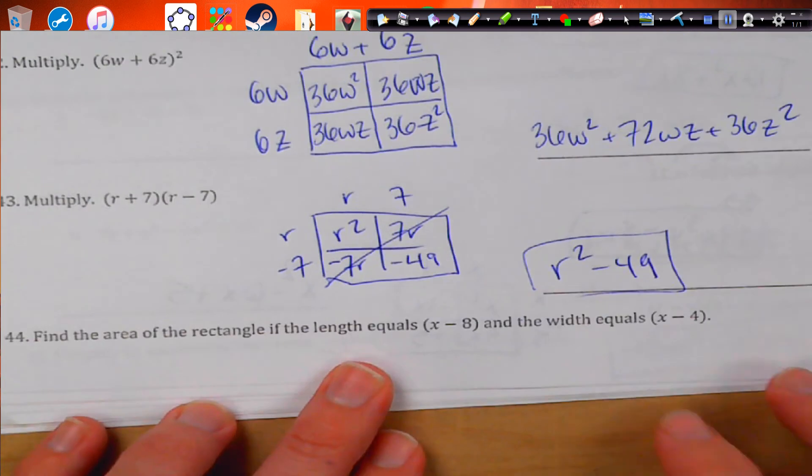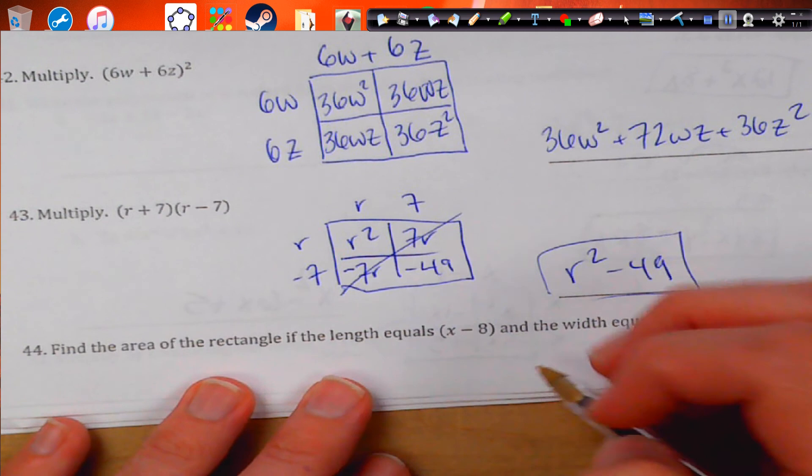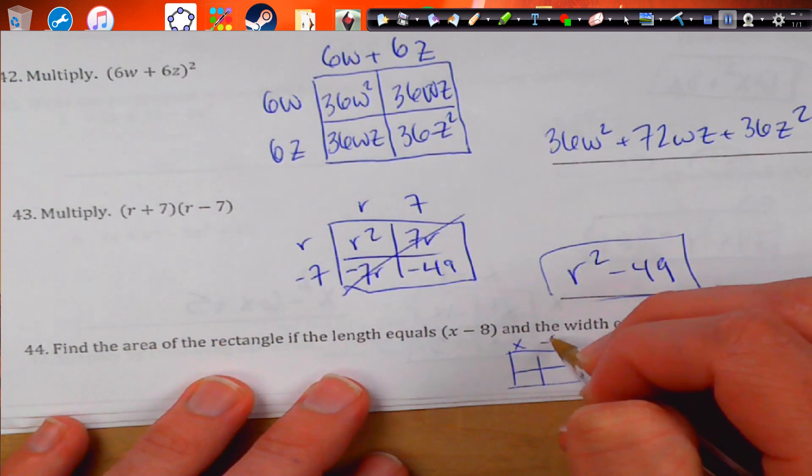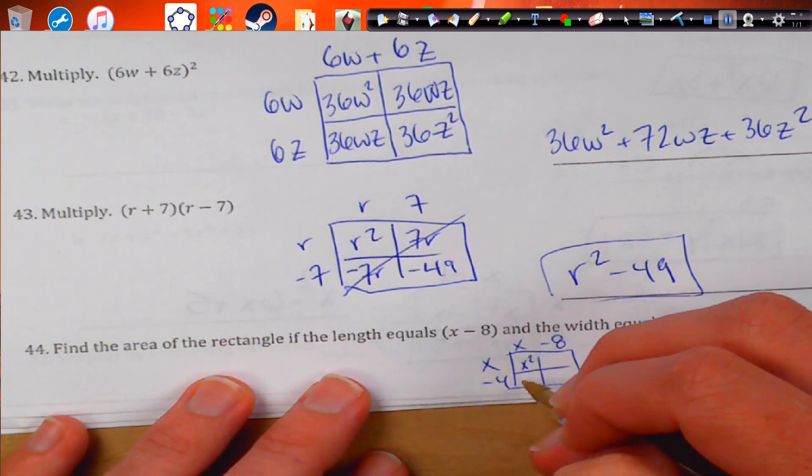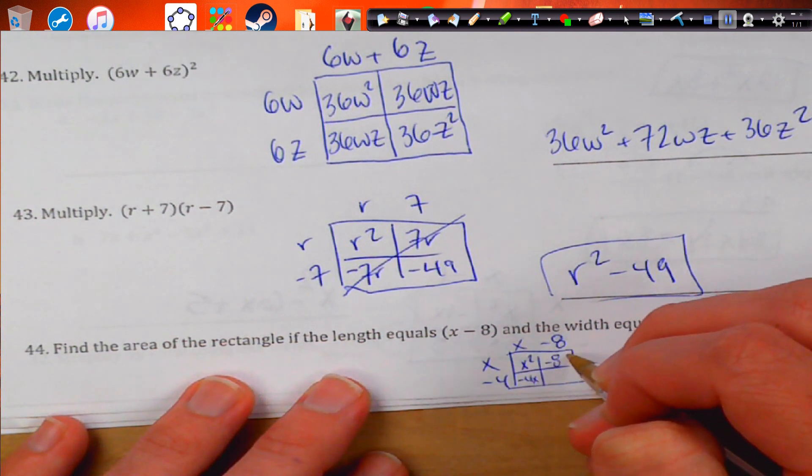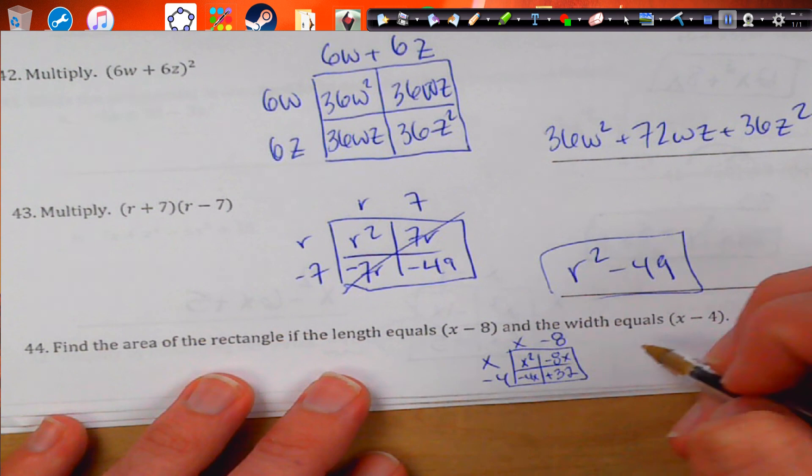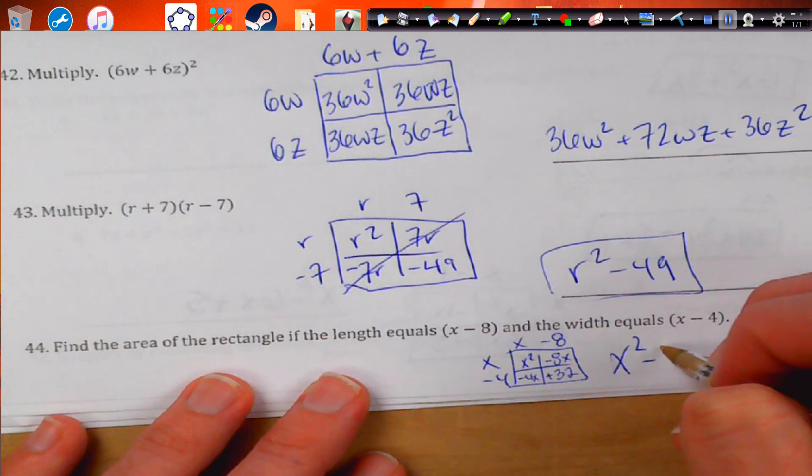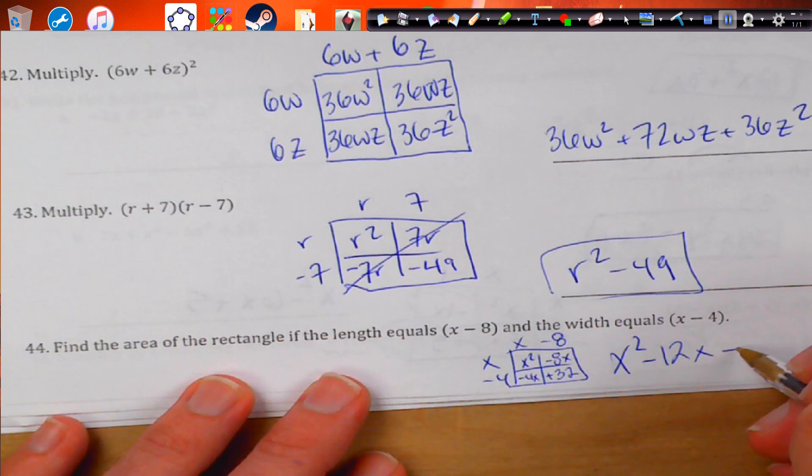Find the area of the rectangle. Length equals x minus 8. And the width equals x minus 4. This is box method. It's like we want you to be good at this or something. So, we get x squared. Negative 4x. Negative 8x. And that's going to become positive 32. So, we get x squared minus 12x, because negative 4 and negative 8 add together, plus 32.